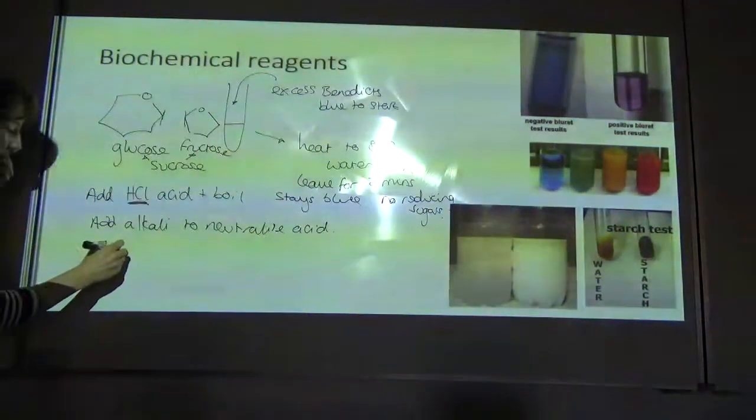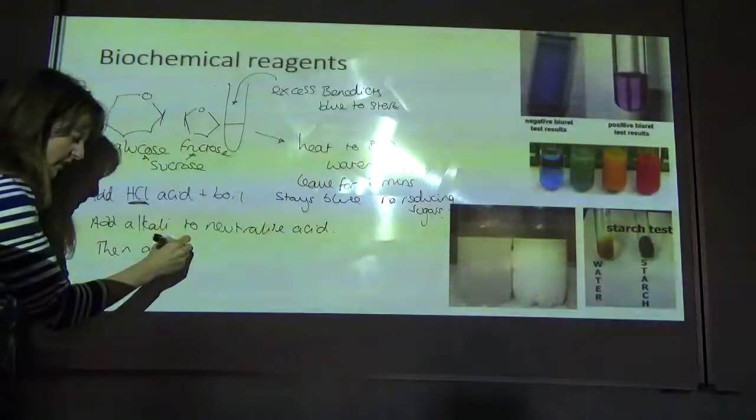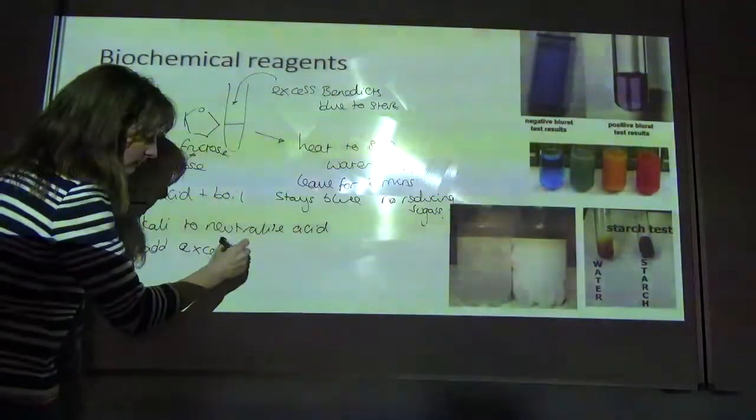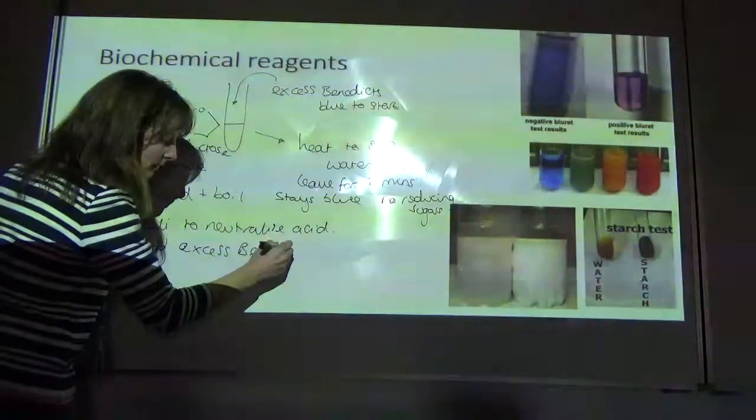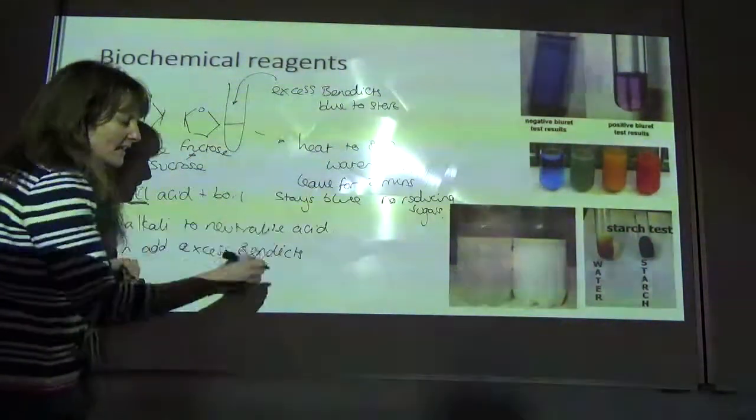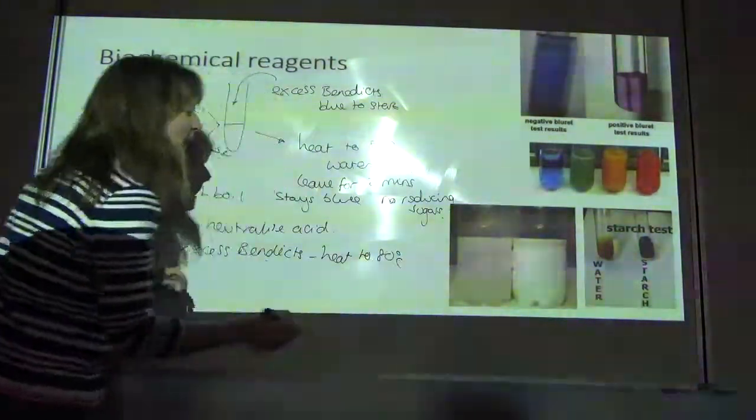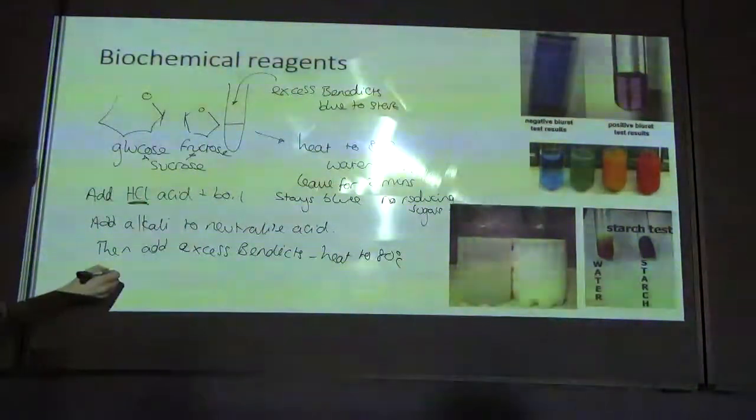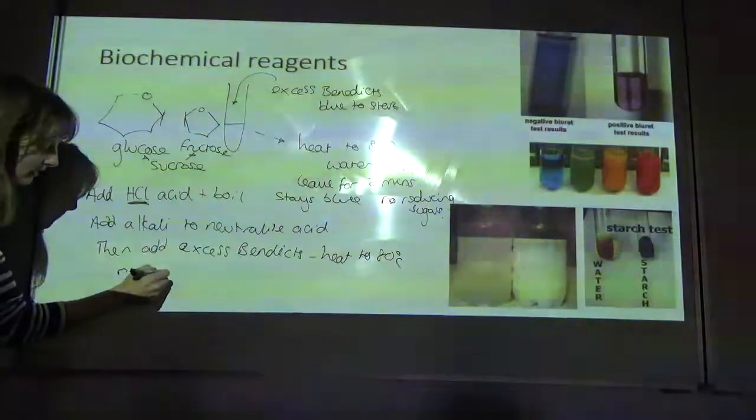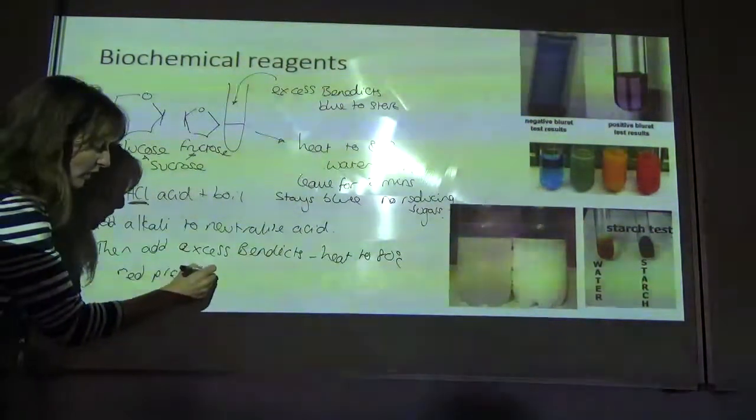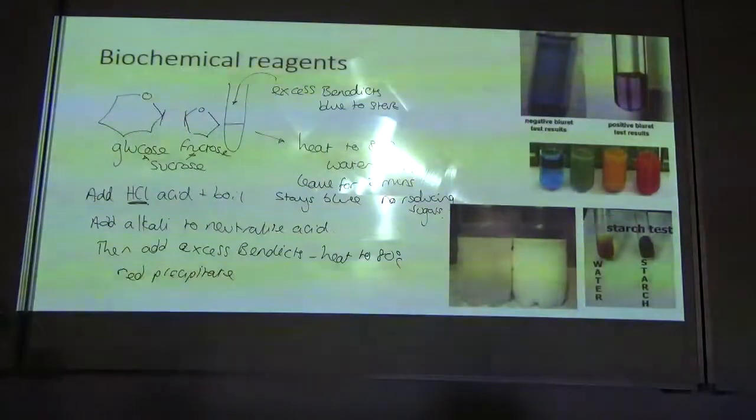Then add excess Benedict's and heat to 80 degrees. And if you then get a brick red precipitate, then you know that you've started with a non-reducing sugar, you've made it into a reducing sugar, and you've got the test. So you knew then you had sucrose present in the first place.